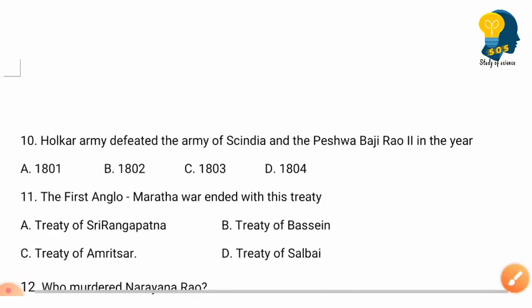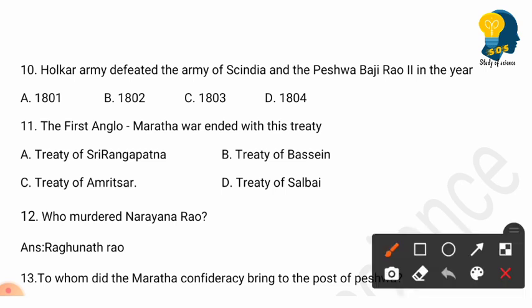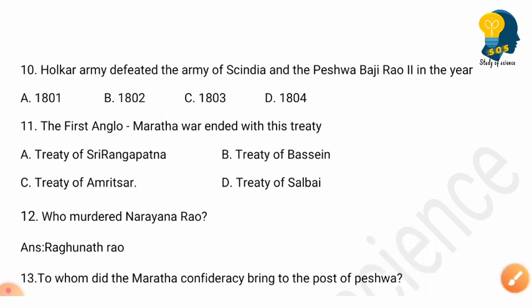Question 10: The Holkar army defeated the army of Sindia and Peshwa Bhaji Rao Second in the year — options: 1801, 1802, 1803, 1804. The correct answer is option B: 1802.